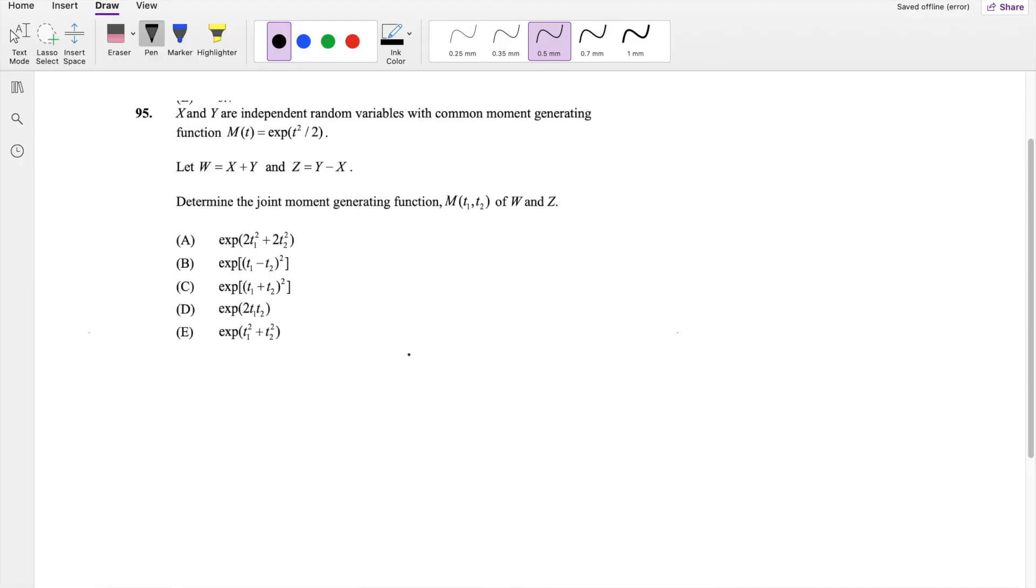In this video, I'll be going over question 95 on SOX and P. So pause the video real quick and try this problem yourself. Okay, assuming you've attempted, let's just dive right in. So, we know by definition the moment generating function M_X(T) is equal to the expected value of E to the TX.